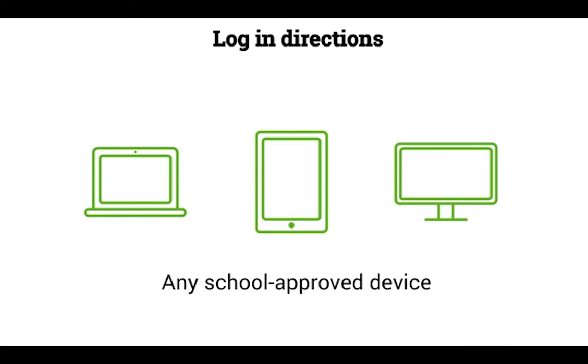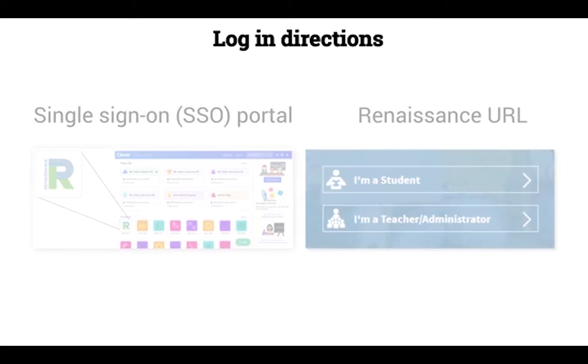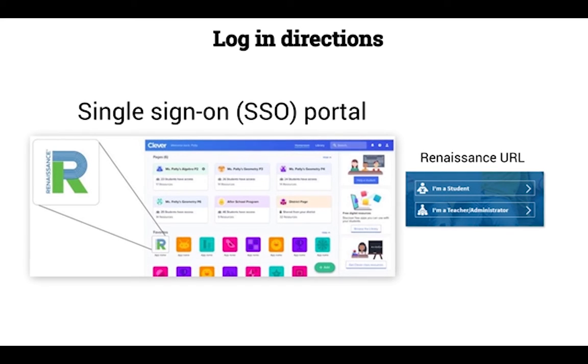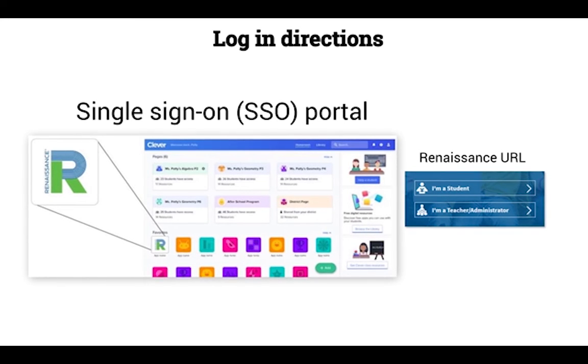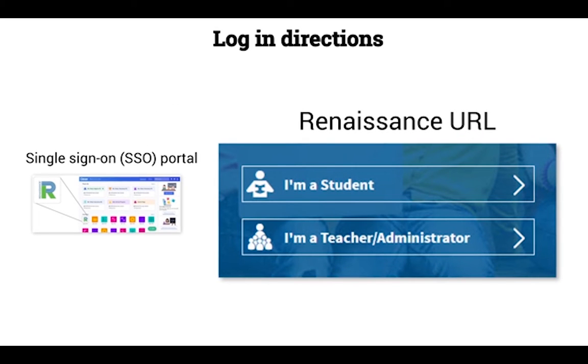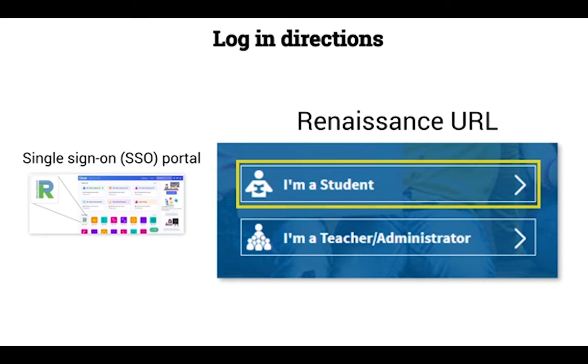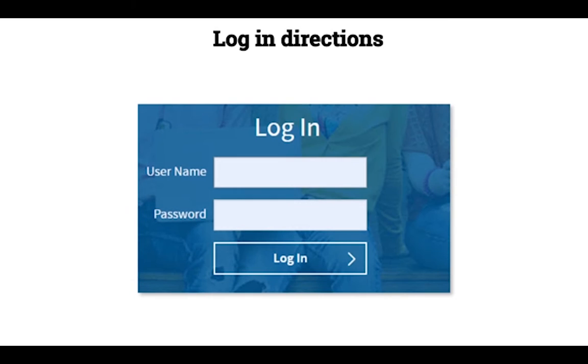Students can take the test on any school-approved device with an internet connection. If your school uses a single sign-on portal for all of the apps your student uses, simply log into that portal and select the Renaissance app. If your school does not use a single sign-on portal, open a web browser and go to the Renaissance link provided by your school or district. On the login page, select I'm a student. Enter the student username and password and then select login.